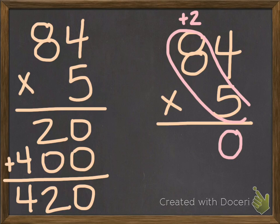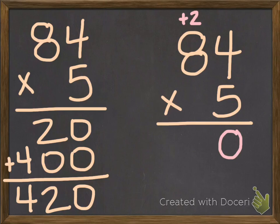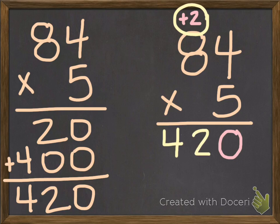Next step is going to be for me to multiply the tens. So 8 times 5 is 40. But I still must add 2 more. 40 plus 2 is 42. As you can see here, I still got the same product.